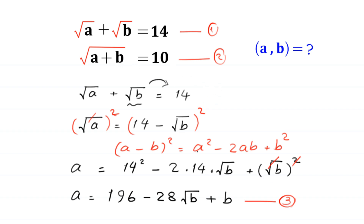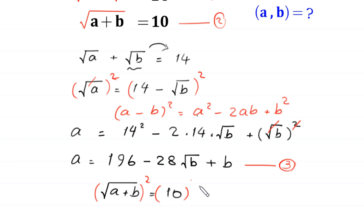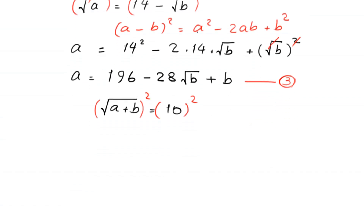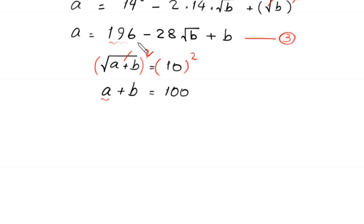From equation 2, root of (a plus b) is equal to 10. We take square of both sides, so this square cancels with the square root and we are left with a plus b is equal to 100. Now in this equation, we replace a with its value from equation 3: 196 minus 28 times root b plus b.